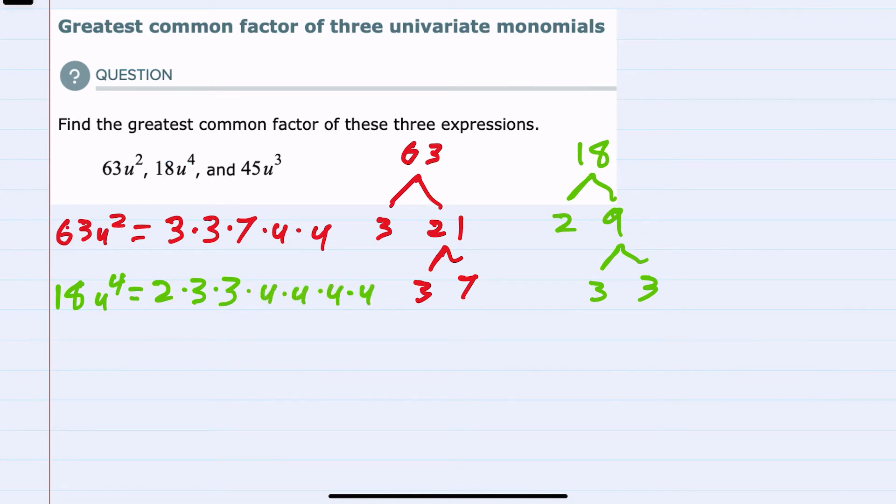And then the 45u³, the 45 broken into prime factors: 45 is 3 times 15, which is 3 times 5 as prime factors. So the 45u³ would be written as 3 times 3 times 5 for the 45, and then u³ is u times u times u.